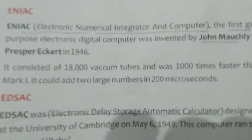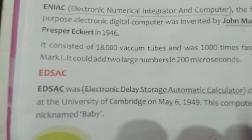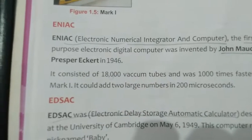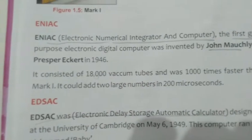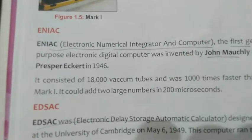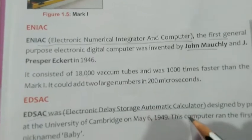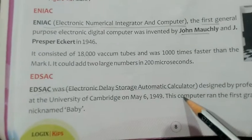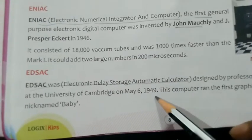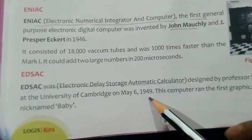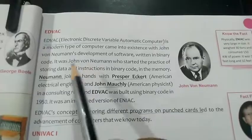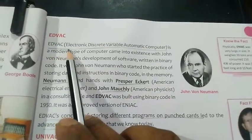The next machine is known as EDSAC. The full form is Electronic Delay Storage Automatic Calculator, developed in the year 1949.